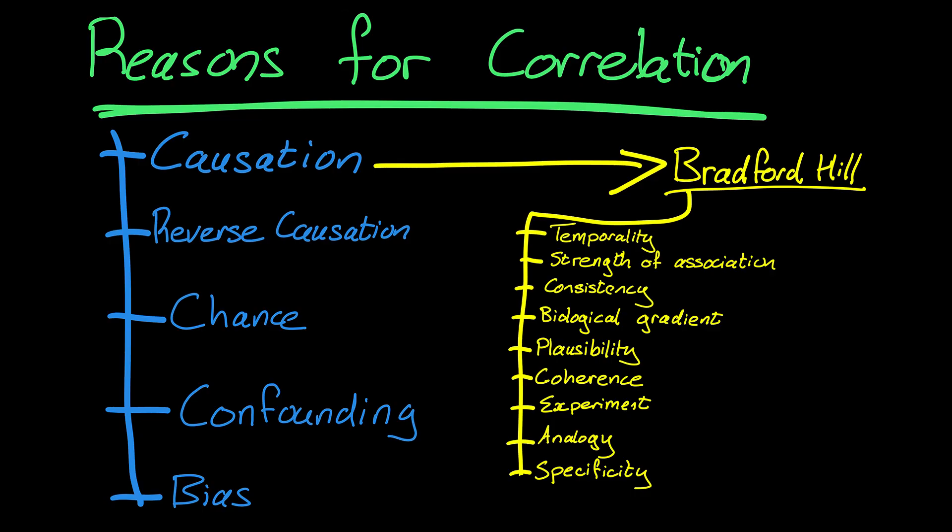That third factor can't be on the causal pathway between the exposure and the outcome, and we call it a confounding variable. That can incorrectly give you a sense that there's a causative relationship between an exposure and outcome. You will see a correlation, but it isn't a real correlation — it's caused by a confounding variable.